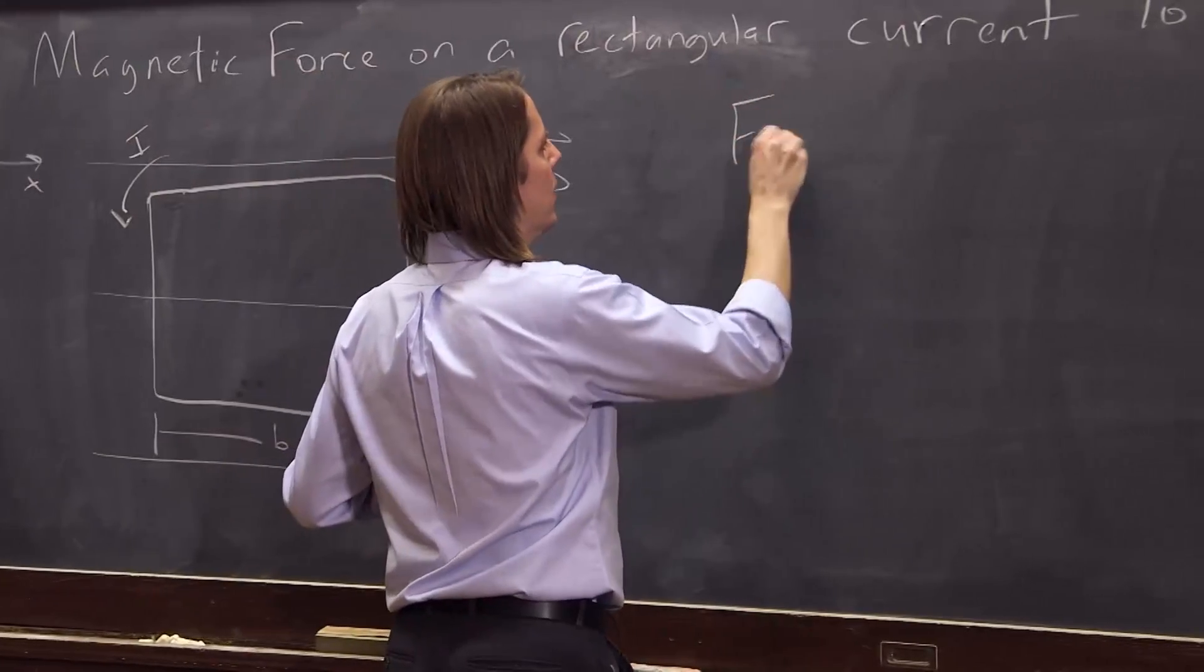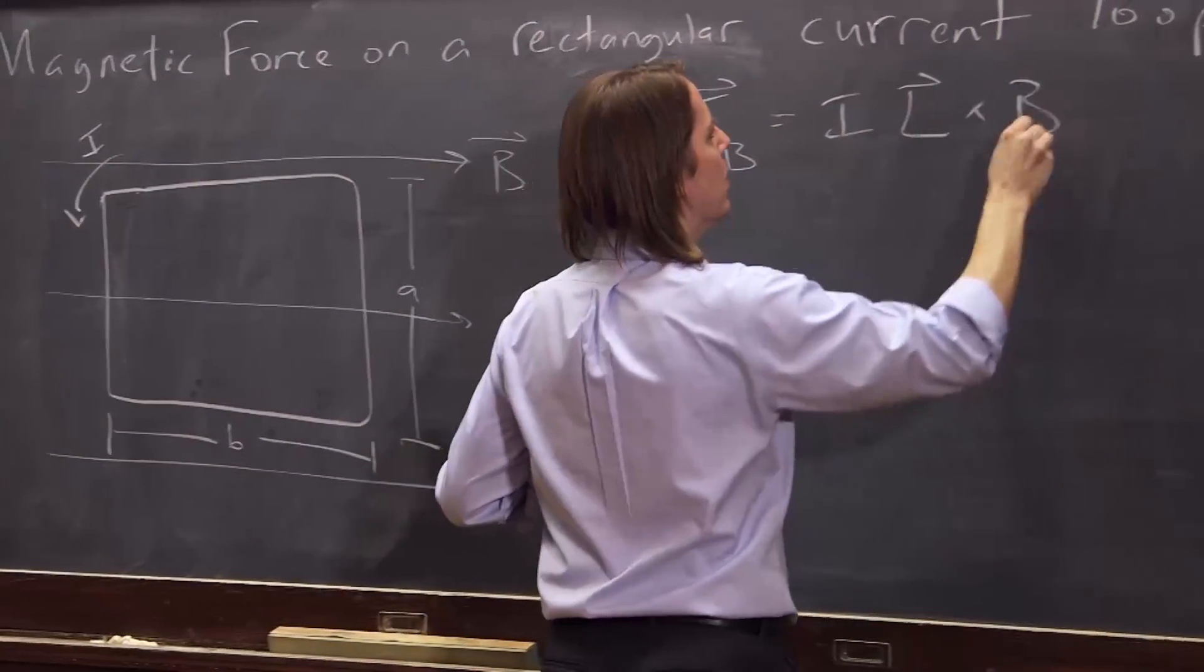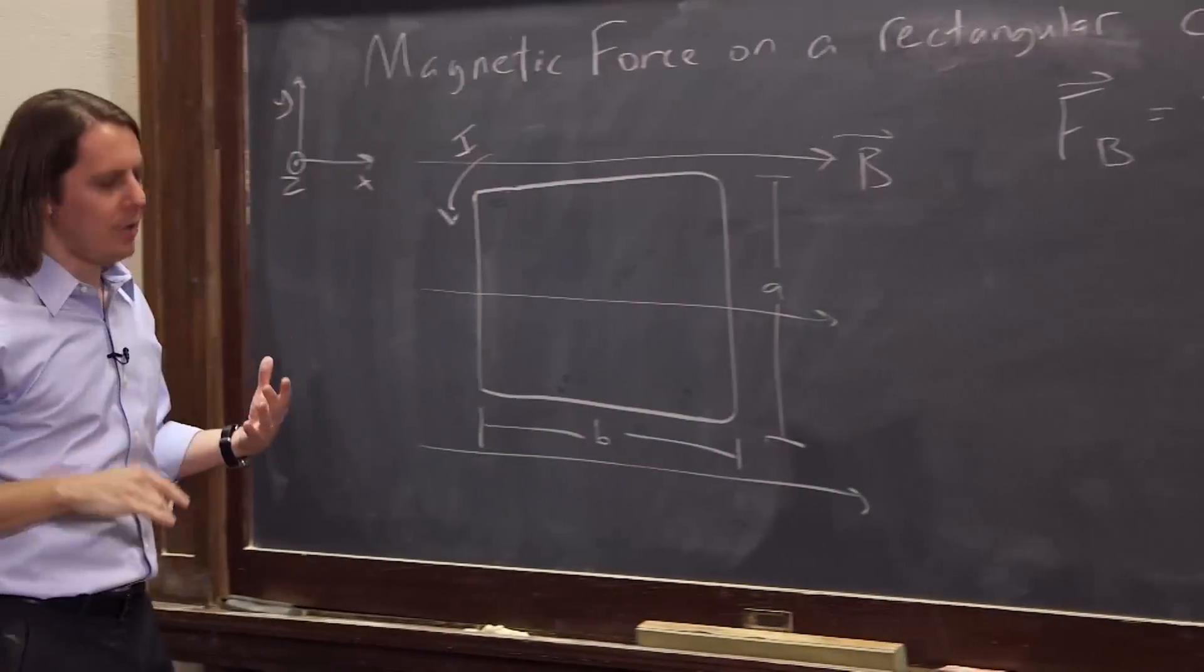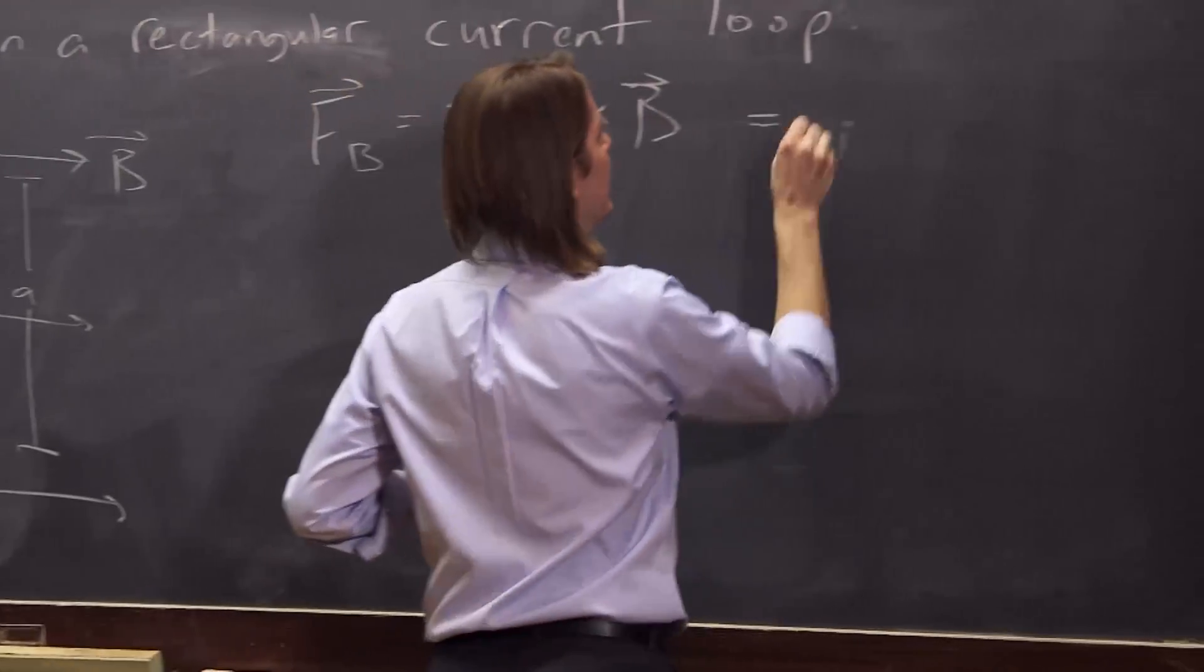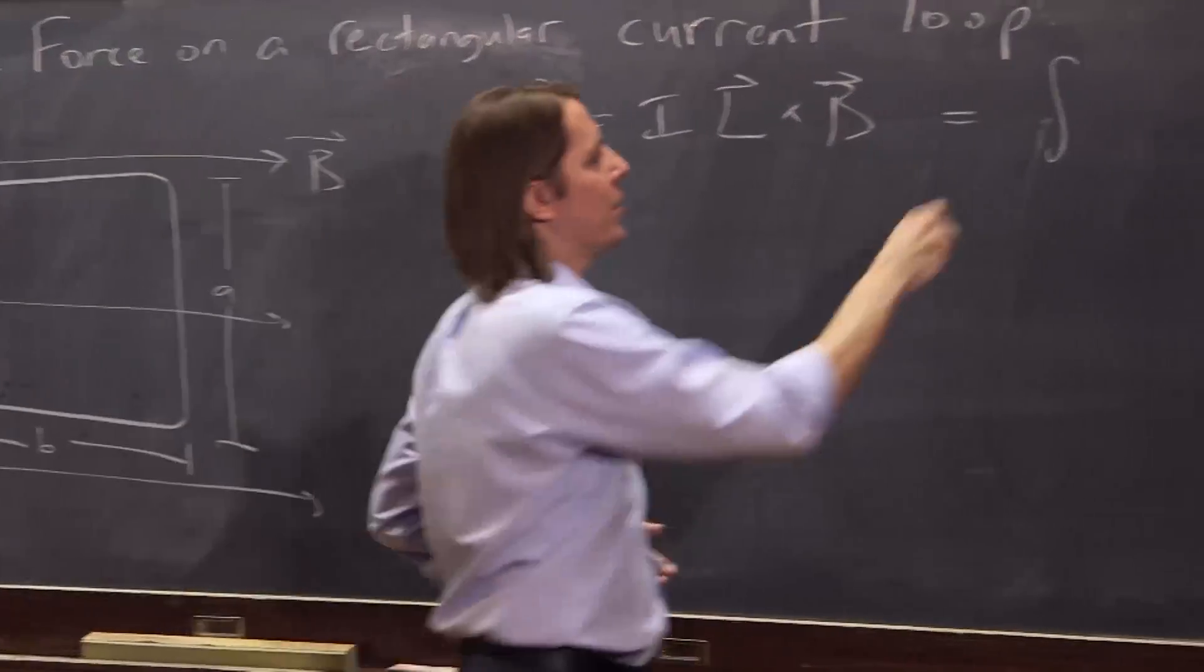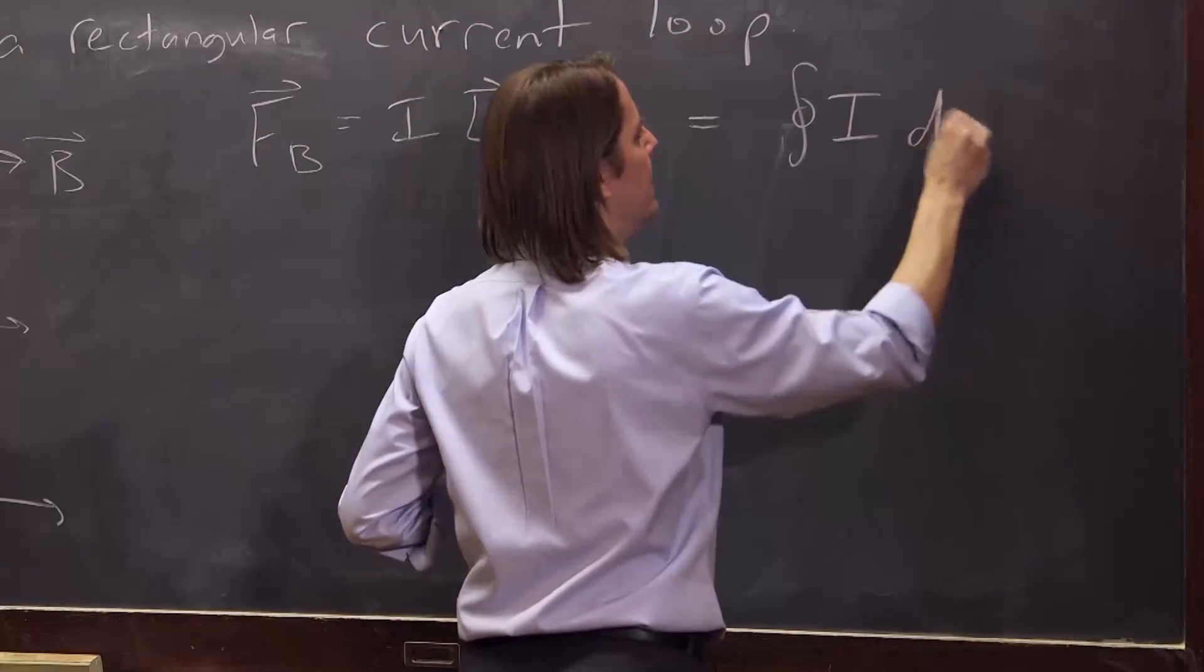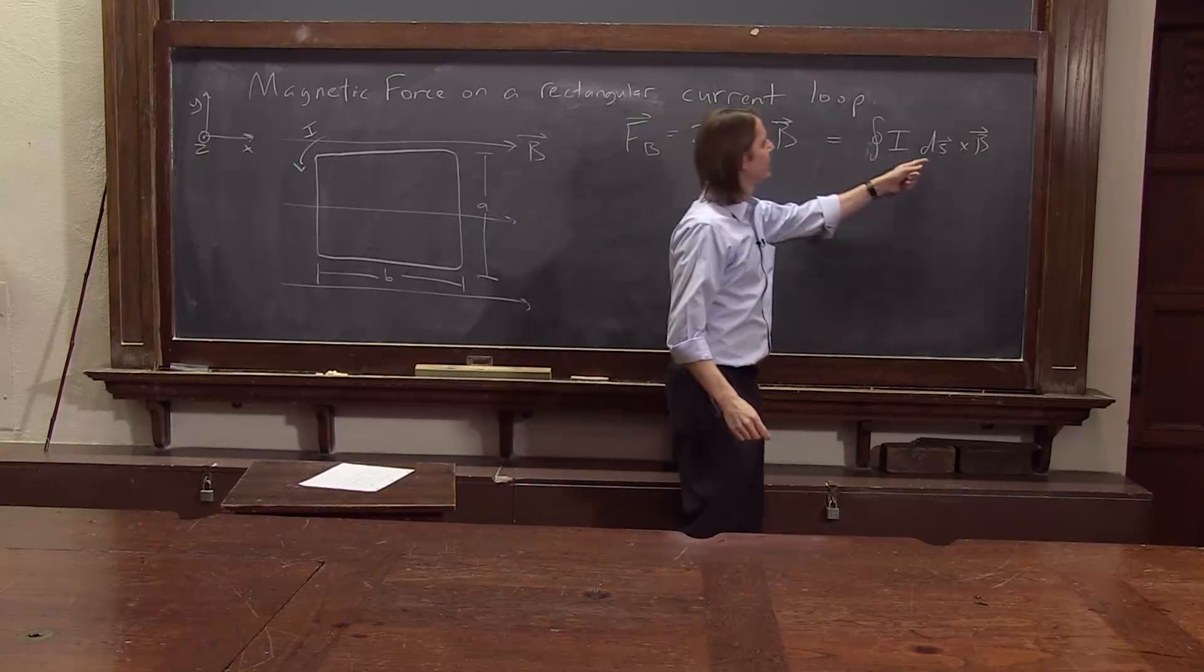Well, we know that F_B is I L cross B. And we know that if it's not a straight line, we have to do an integral. That it's equal to the integral. And in this case, we're doing a line integral around the loop. So it's actually a closed contour integral. We could put a loop on it like that. But it's still I dS cross B. So we can't do this. We have to do this.